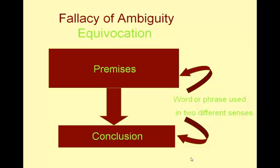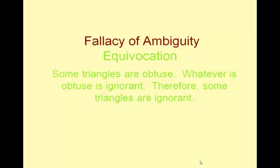Fallacies of ambiguity have ambiguous premises or conclusion. The first one is called equivocation, where a single word or phrase is used in two different senses in the same argument. For example: 'Some triangles are obtuse. Whatever is obtuse is ignorant. Therefore, some triangles are ignorant.' Here, the word 'obtuse' is used in two different meanings in the same argument.